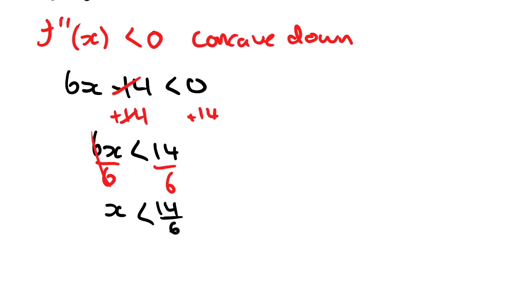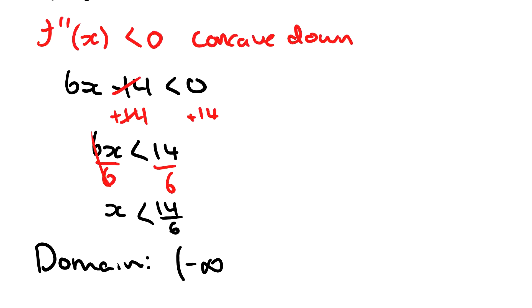We get x is less than 14 over 6, but the question asked for the domain. Remember, the domain includes all possible x values. Since the inequality says x must be less than 14 over 6, we write it in the correct form: the domain goes from negative infinity all the way up to 14 over 6.